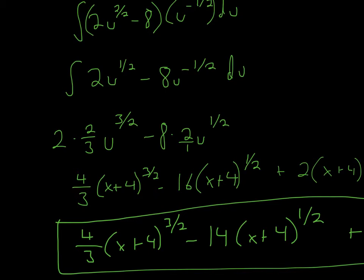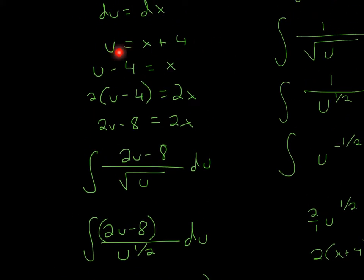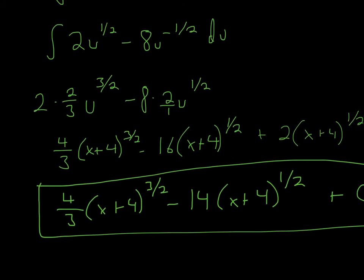For the second term, the 8 is out to the side. We add 1 (written as 2/2) to the exponent negative 1/2, which gives positive 1/2. We invert 1/2 to get 2. So 8 times 2 gives 16. We now have 4/3 times u^(3/2) minus 16u^(1/2). Remember that u equals x plus 4, so we replace u with (x + 4). Don't leave the answer in u — they'll count off for that on exams.